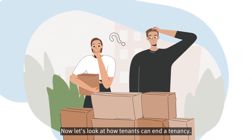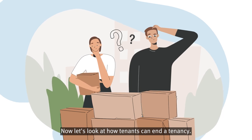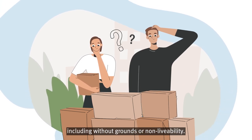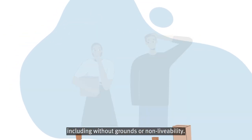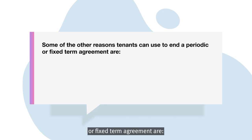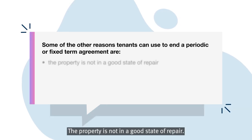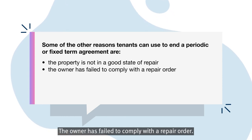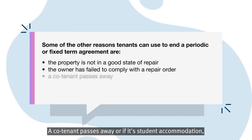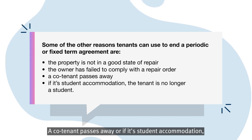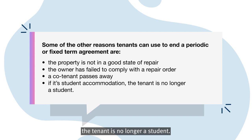Now let's look at how tenants can end a tenancy. Tenants can end a tenancy using reasons including without grounds or non-liveability. Some other reasons tenants can use to end a periodic or fixed-term agreement are: the property is not in a good state of repair, the owner has failed to comply with a repair order, a co-tenant passes away, or if it's student accommodation, the tenant is no longer a student.